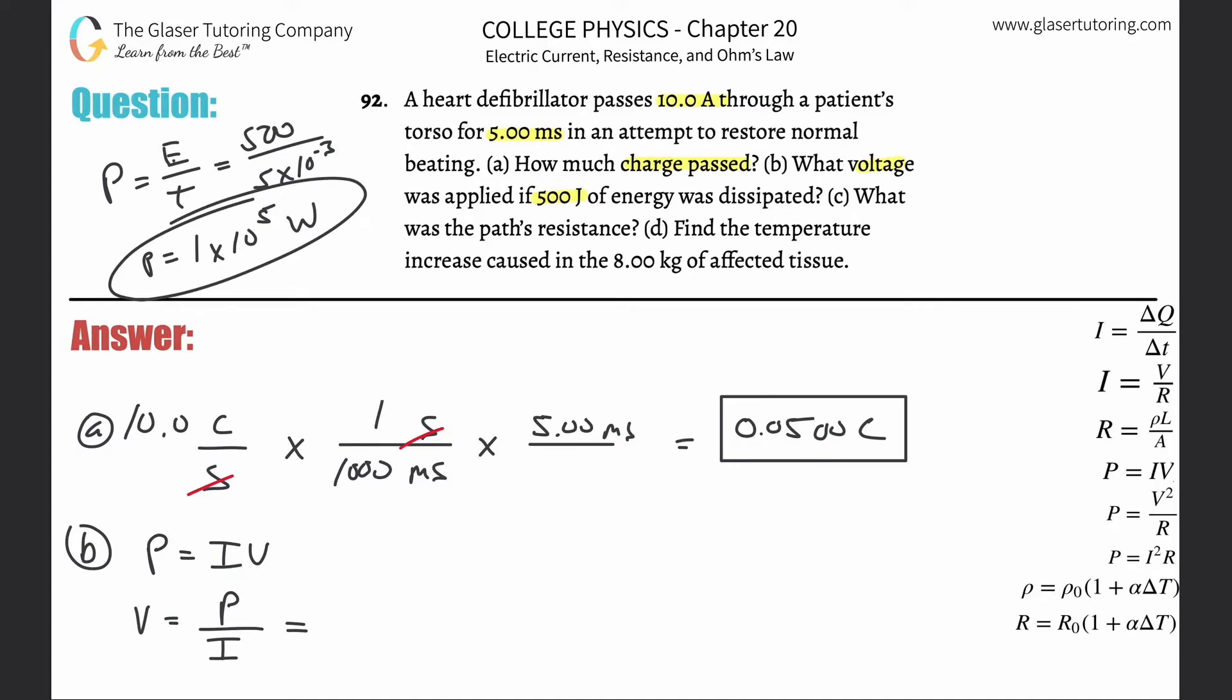That is what we're going to plug in. So this becomes 1 times 10 to the fifth, all then divided by the current of 10 amps they applied. And the voltage now we realize is going to be 1.00, I guess 3 sig figs, whatever, times 10 to the fourth volts. And that's it. That's the voltage. And that takes care of letter B.